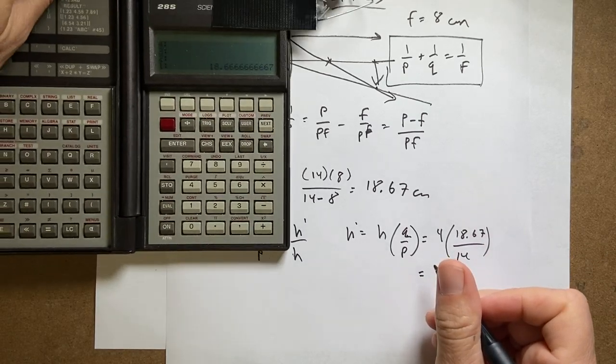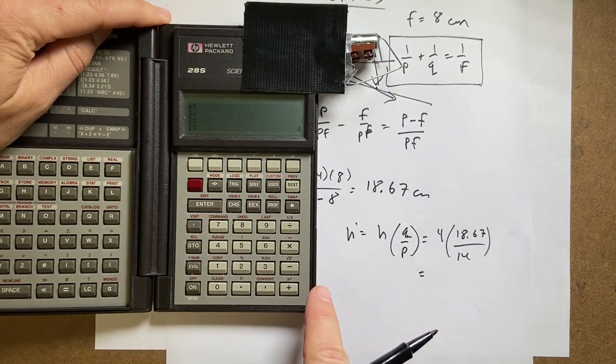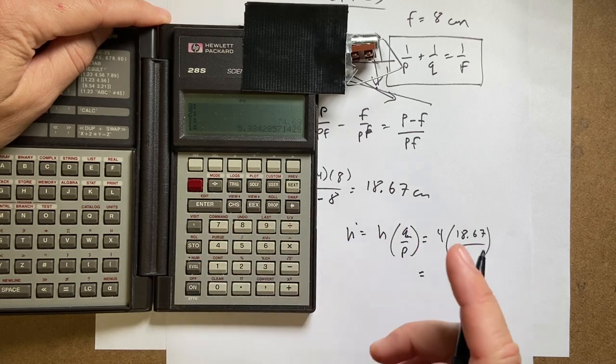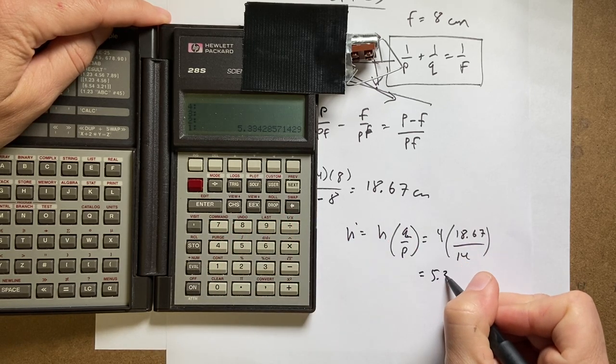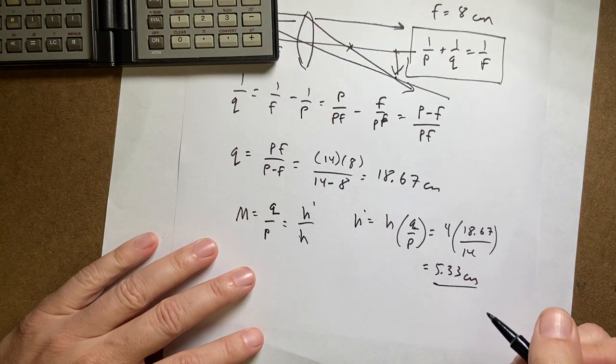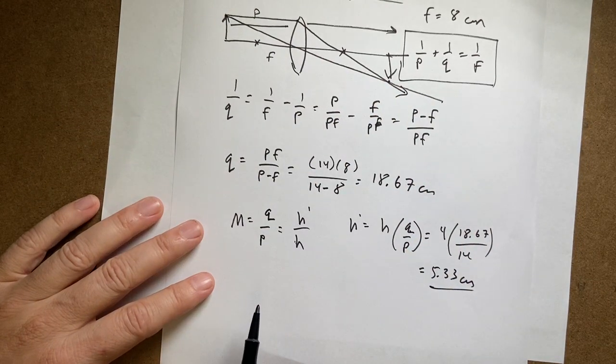So the calculation is going to be 4 times 18.67 divided by 14. I get 5.33. That's a height—that's not the magnification, that's centimeters. That's the height of the image, and it's real. There you go.